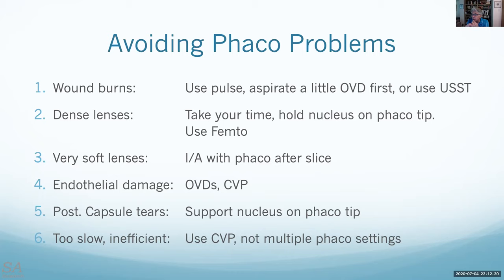You will tend to burn the FACO tip if you use continuous FACO and dispersive OVDs. If you use cohesive ones, they stay in the top part of the chamber and you can put a little layer of balanced salt below the OVDs. All you need is a tiny bit of fluid to allow flow and you cannot burn the incisions. The three points: use pulse, be careful to aspirate some OVD if you use dispersives, or use the ultimate soft shell technique where you always have a thin layer of water.